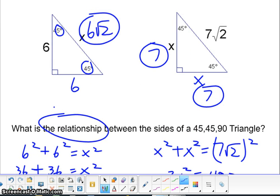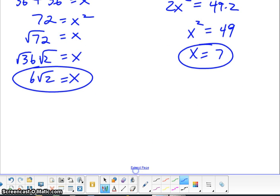And then hopefully you will notice the relationship between the sides of a 45-45-90-degree triangle. This will always work where the two sides will be the same, the two legs, and the hypotenuse will always be multiplied by radical 2. It happens in both examples.